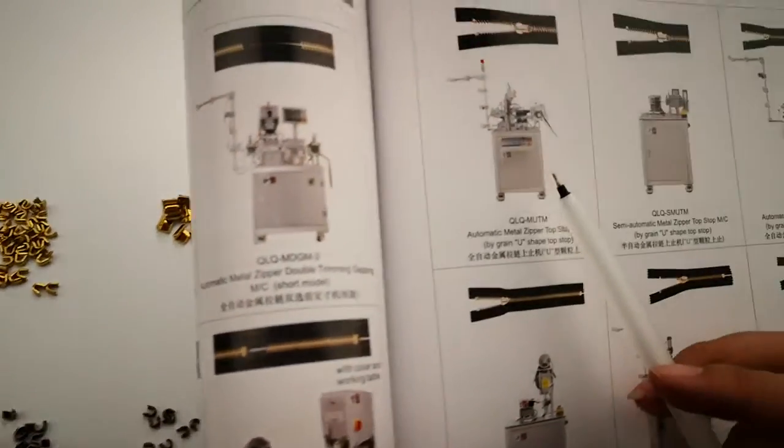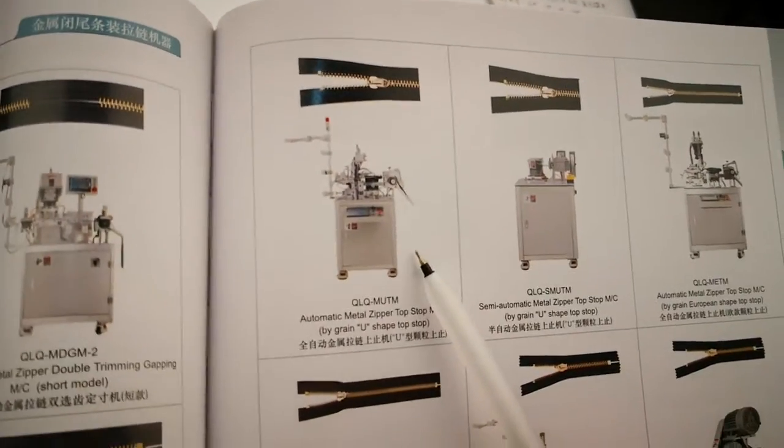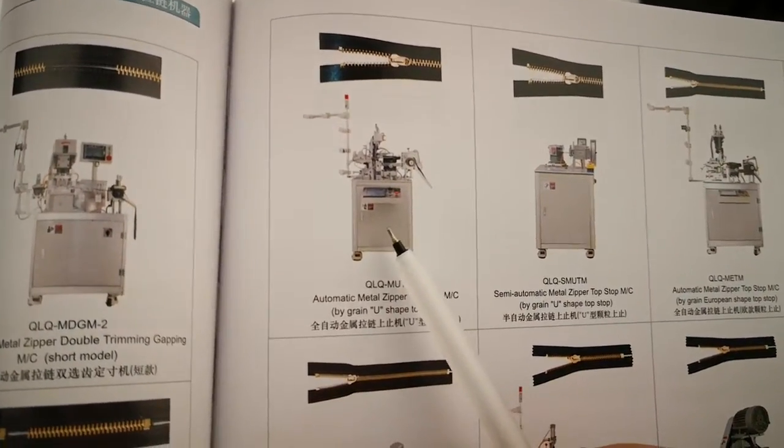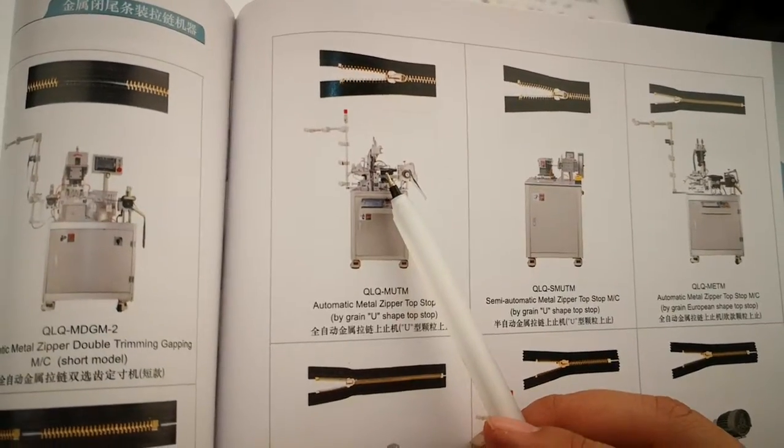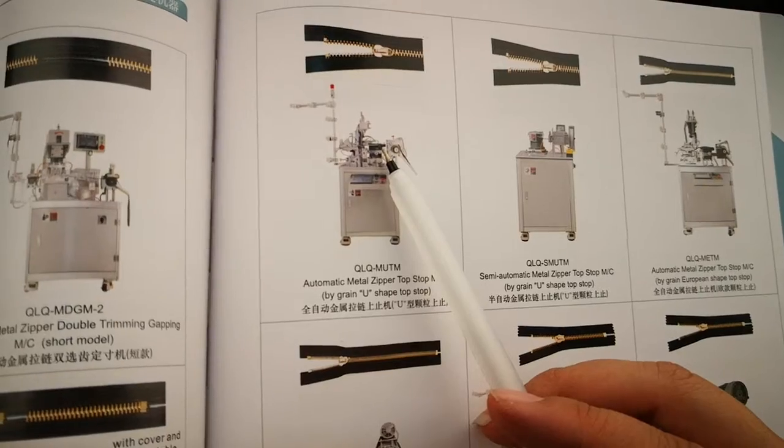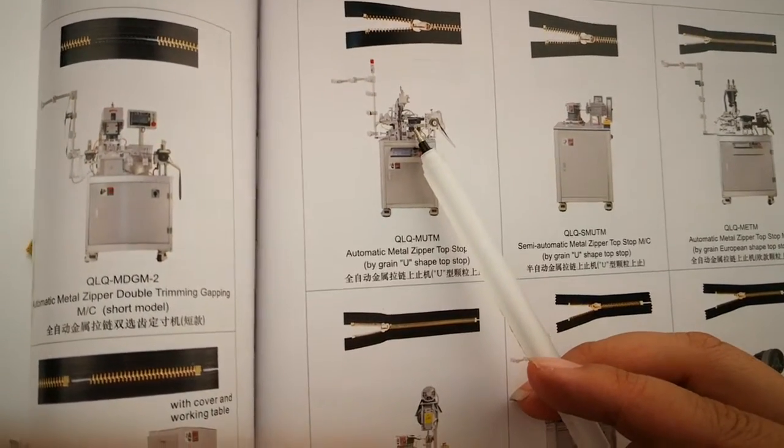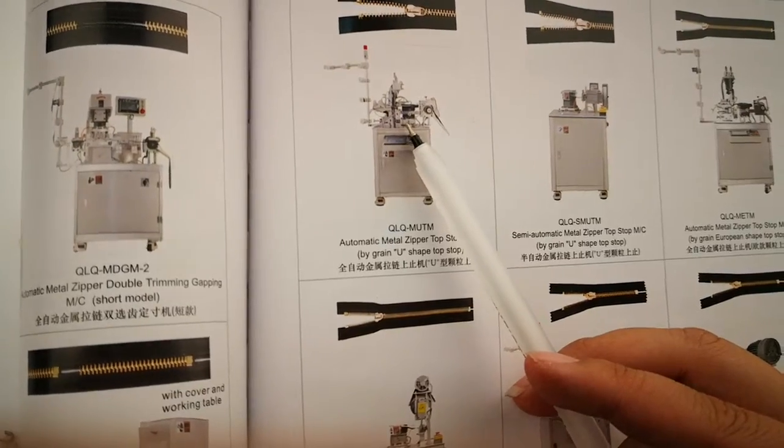This is the automatic metal zipper top stop machine. If you have this machine available in your factory, then we must send you at least 0.2 kg samples for testing. Because if the size is not suitable for your available machine, then the top stop cannot run in the vibrator.